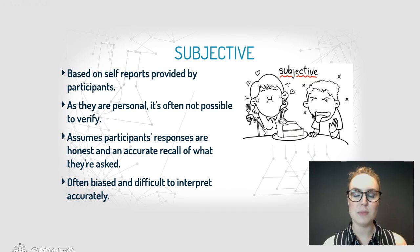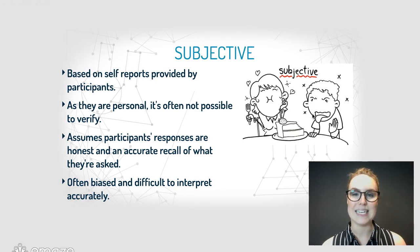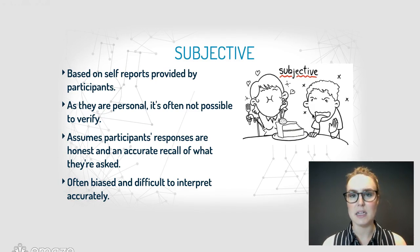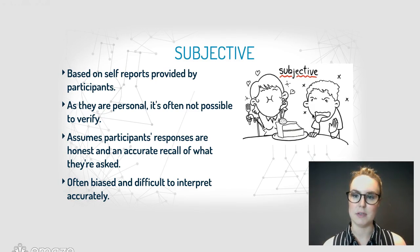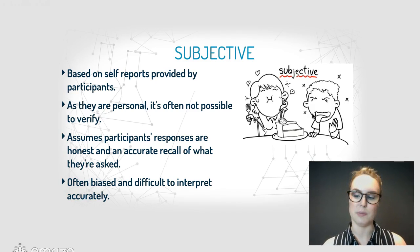Subjective data assumes that participants' responses are honest and an accurate recall of what they're asked, meaning they have to respond to the question really accurately. Subjective data are often biased and really difficult to interpret accurately because it's based on that participant's own self-report.